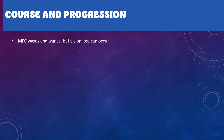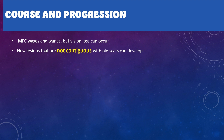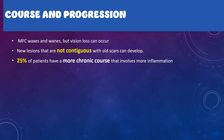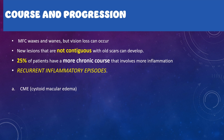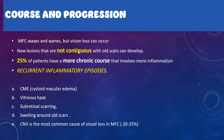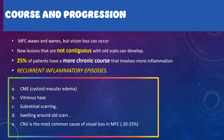Multifocal choroiditis has a waxing and waning type of progression, and vision loss can occur. New lesions can develop, but unlike toxoplasma, they will not develop from old scars. About 25% of patients have a more chronic course with greater inflammation. These patients can develop cystoid macular edema, vitreous haze, vitreous inflammation, subretinal scarring, and swelling around old scars. The most common cause of visual loss is development of a choroidal neovascular membrane.